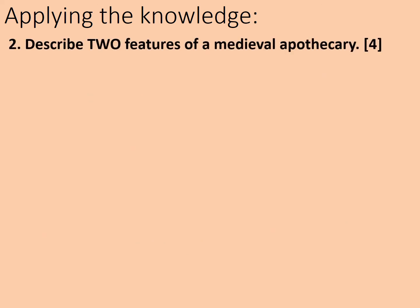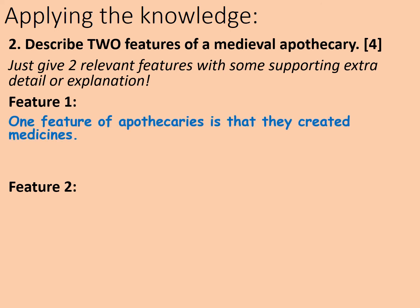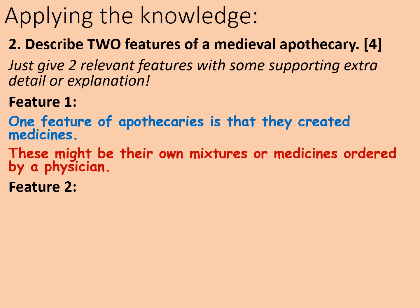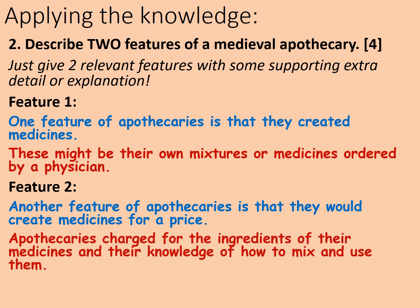Let's have a go at another one: describe two features of a medieval apothecary. Again, only four marks — give two relevant features with some supporting extra detail or explanation. One feature of apothecaries is that they created medicines — these might be their own mixtures or medicines ordered by a physician. Another feature of apothecaries is that they created medicines for a price — apothecaries charged for the ingredients and their knowledge of how to mix and use them. The only real trip-up you can make with this is not reading the question properly and therefore choosing irrelevant examples.